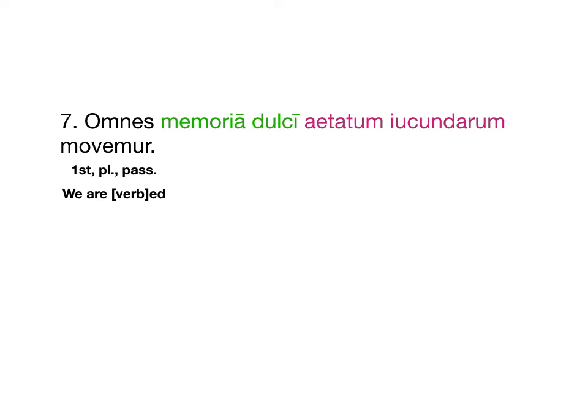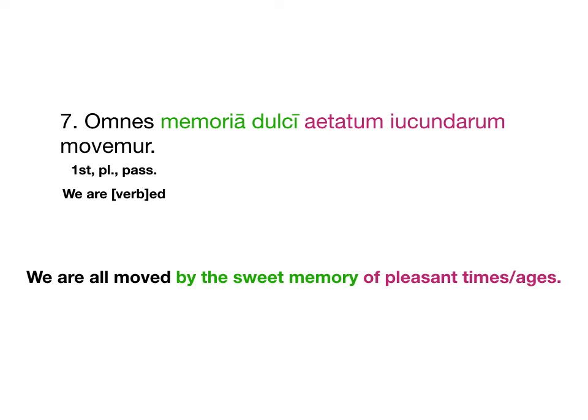This is kind of interesting because we have an adjective Omnes modifying the we — so that's a little tricky. You want to say we are all, as in Omnes. Omnes is a subject, but also we is a subject — first person plural. We are all moved by the sweet memory of pleasant times. So they're moved by Memoria Dulce — it is an ablative of means. Remember, more than half the time when we have a passive verb, we will also have an ablative of means or ablative of agent, and that'll be the thing actually doing the verbing.